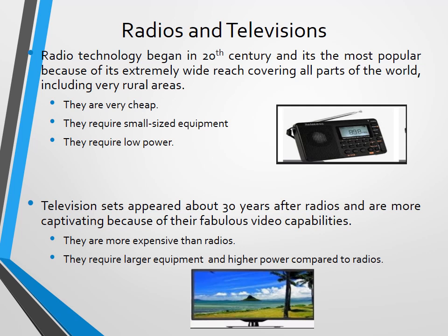Dissemination equipment includes radios, televisions, and the internet. Radio technology began in the 20th century and is the most popular because of its extremely wide reach and coverage — it can cover almost all parts of the world including rural areas. Radios are very cheap, require small equipment, and don't need electricity to work; they can operate on low-power generation devices.